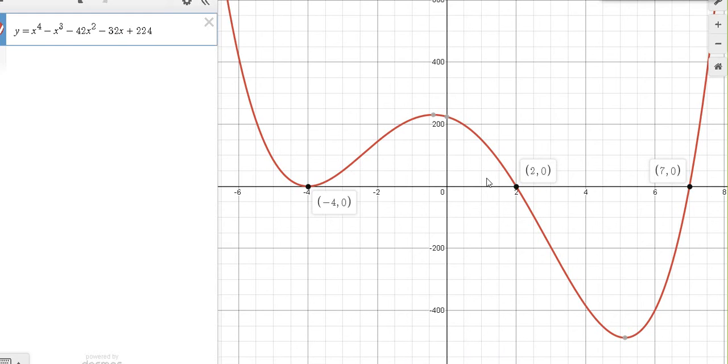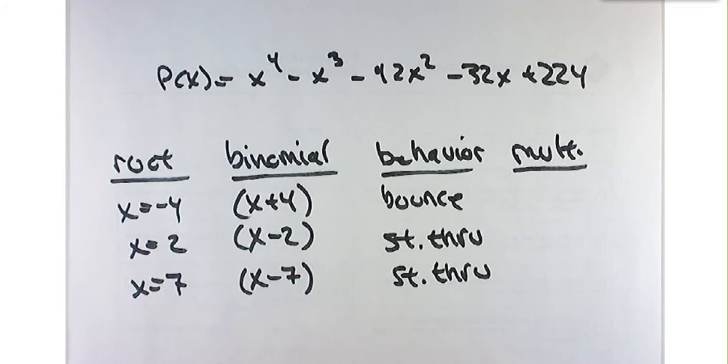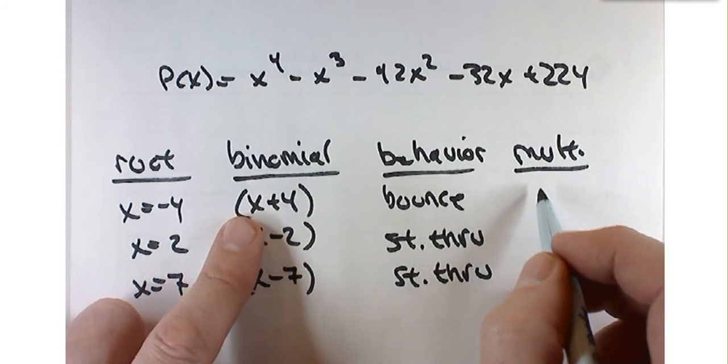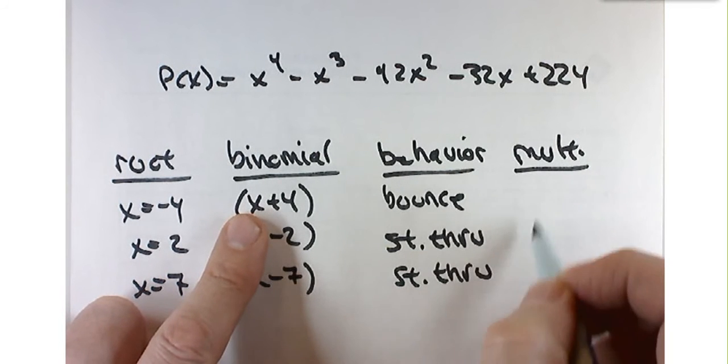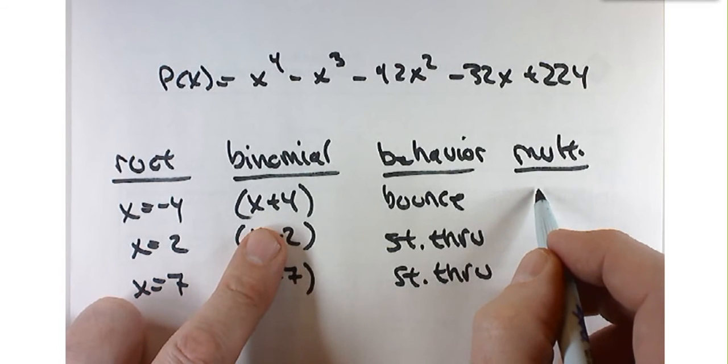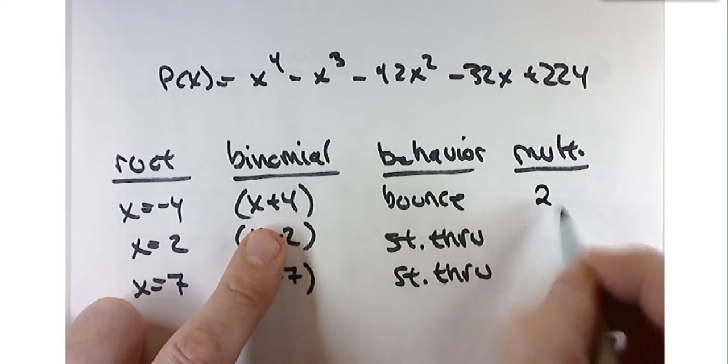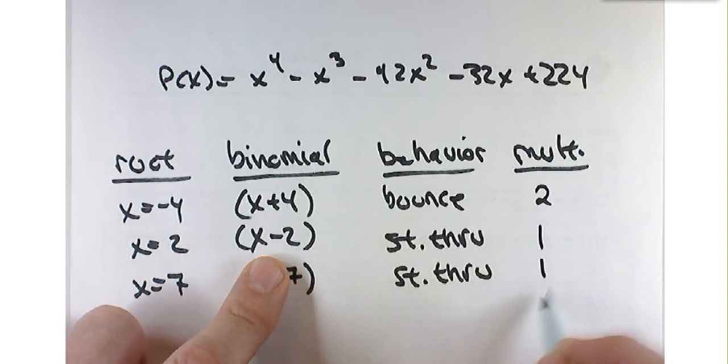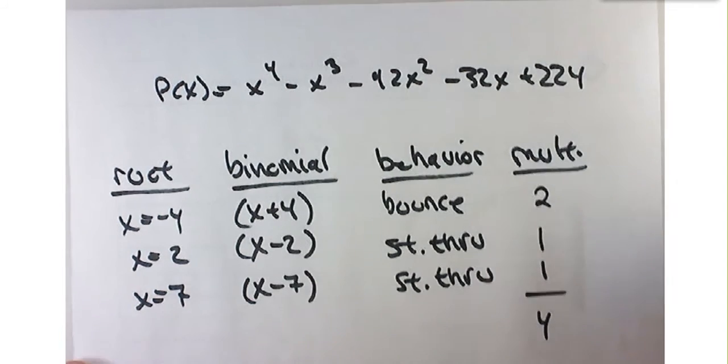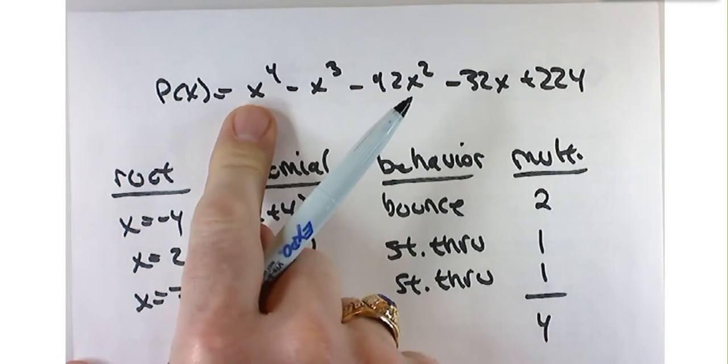They don't kind of wiggle through. That would mean they skim the x-axis near the root for a little bit, but neither of them do. Now, what multiplicity do you associate with each of these, with a bounce?